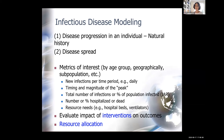Resource allocation is an area where epidemiology models that inform us about disease spread are combined in creative ways with optimization models — coming from my field — to give us a good sense of what might be the best way to allocate limited resources.